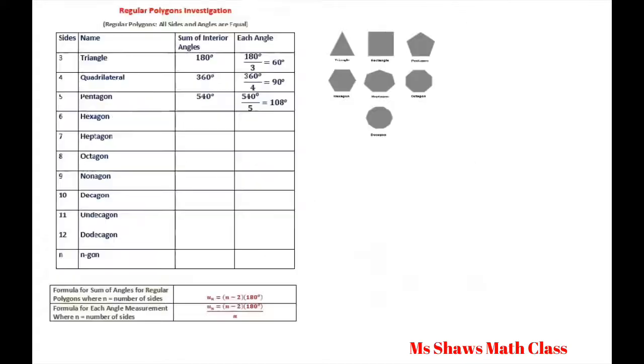Now what we want to do is fill this out using our formula. Basically we already know the sum of the interior angles for the triangle is 180, the quadrilateral which we're calling the rectangle is 360, the pentagon is 540. All we did is take our number of sides, which is n, so 3 minus 2 times 180.